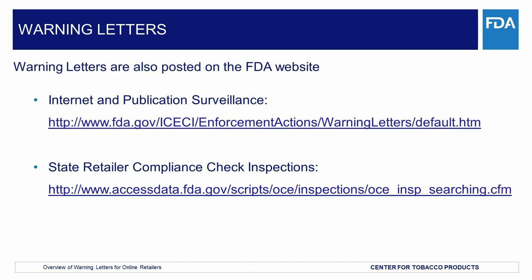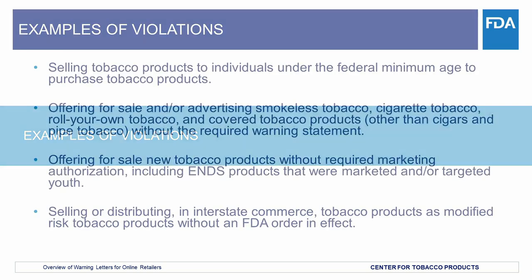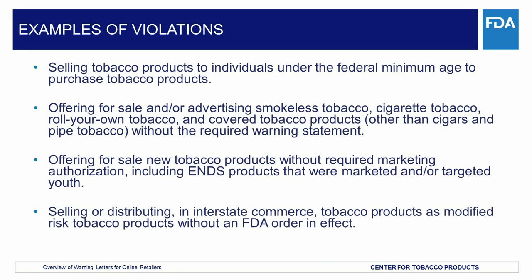Warning letters are posted on the FDA website. You can search for them in either of the two links listed in this slide. Now let's switch gears and discuss common violations that may be found in warning letters. Examples of violations in warning letters CTP has issued to online retailers include selling tobacco products to individuals under the federal minimum age to purchase tobacco products.